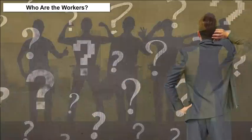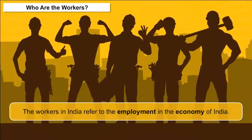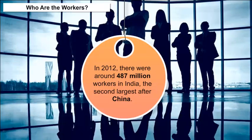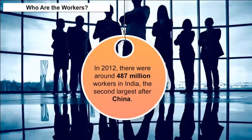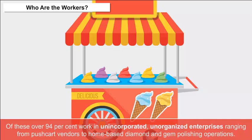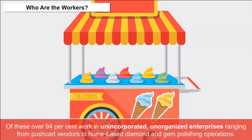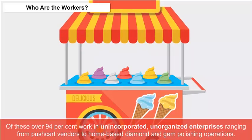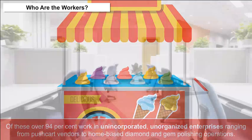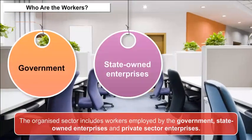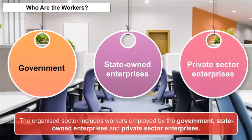Workers in India refer to employment in the economy of India. In 2012, there were around 487 million workers in India, the second largest after China. Of these, over 94% work in unincorporated, unorganized enterprises ranging from pushcart vendors to home-based diamond and gem polishing operations. The organized sector includes workers employed by the government, state-owned enterprises, and private sector enterprises.